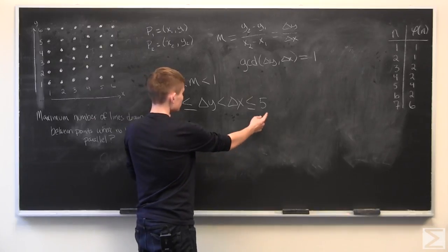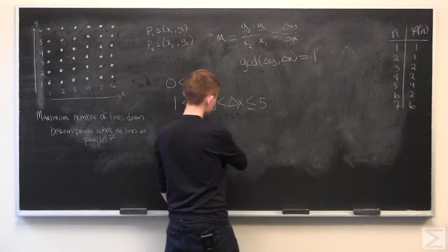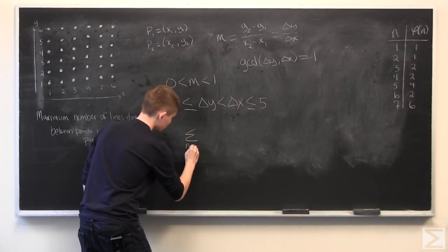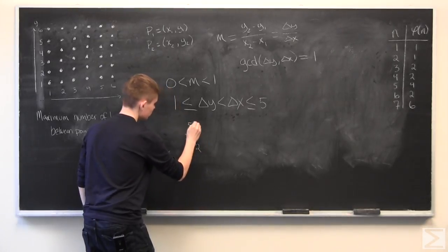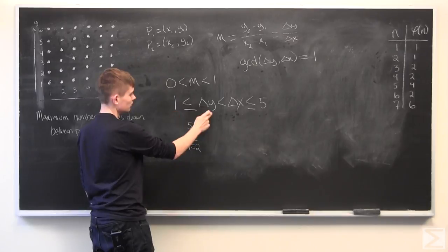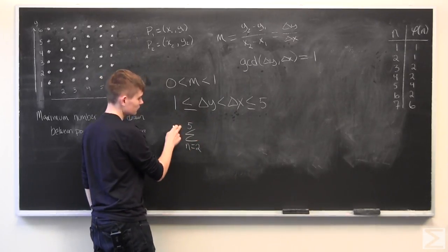Which means that we can write this more succinctly as the sum from n equals 2 to 5, since delta x can't equal 1, since delta y would be equal to delta x at this point. So, it goes from 2 to 5.